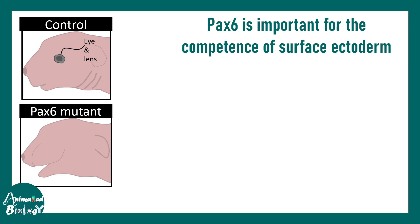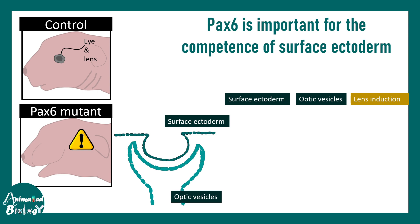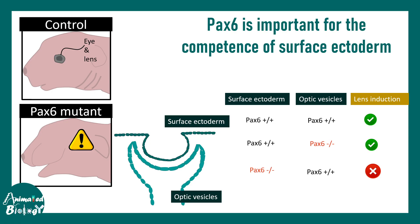Here again is the surface ectoderm and the optic vesicle underneath. Elegant genetic experiments demonstrated the importance of PAX6 as a competence factor. When PAX6 was not deleted from either tissue, lens induction was normal. When PAX6 was selectively removed from only the optic vesicle, lens induction was still normal. But when PAX6 was removed from the surface ectoderm, lens induction failed entirely — showing PAX6 is critically important in the surface ectoderm.